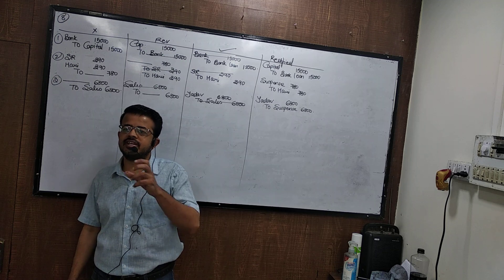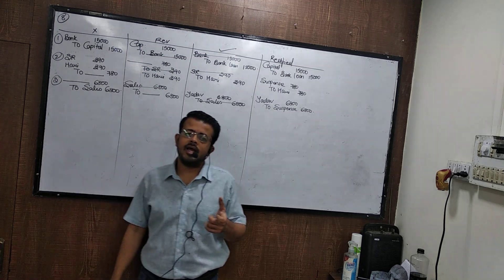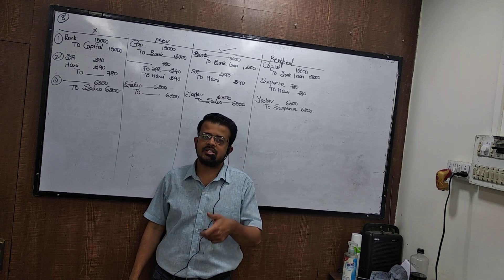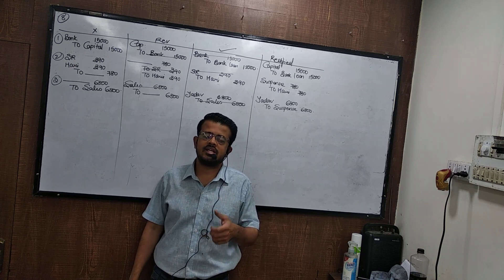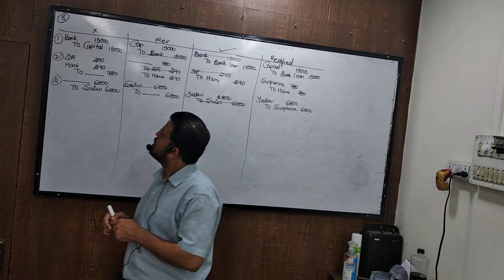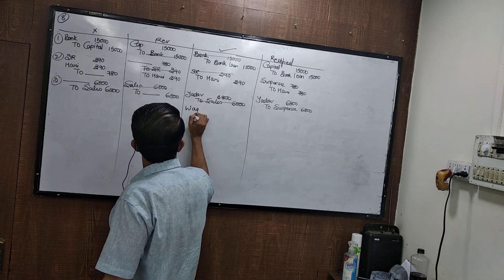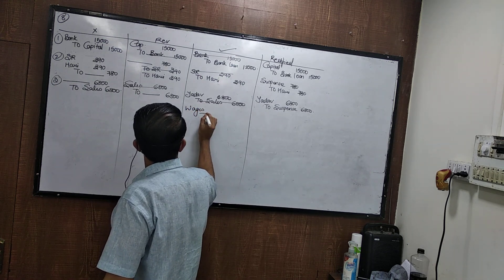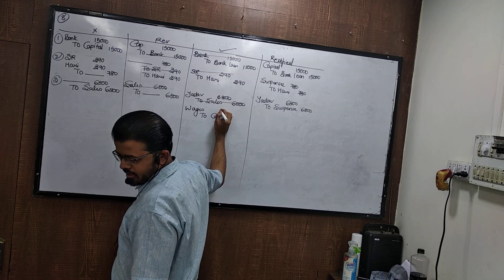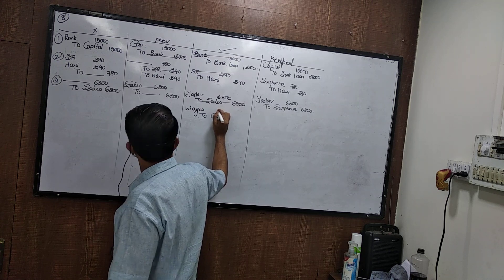Wages paid to Pradeep were wrongly debited to his personal account. What is the correct entry for wages paid? Wages to cash. It was wrongly debited to his personal account — to Pradeep to cash. The reverse is cash to Pradeep, and the rectified entry is wages to Pradeep.